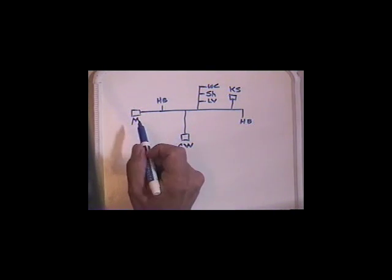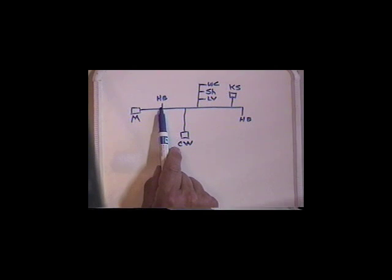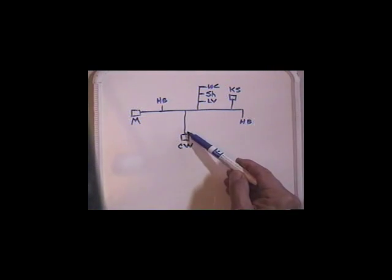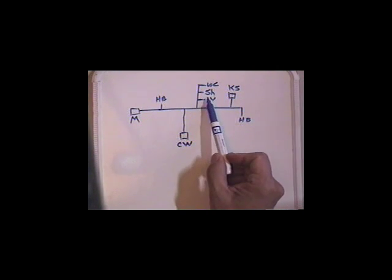Get a piece of paper and make a drawing of this. We're going to start with the meter, come in here to a hose bib, and then branch down to a clothes washing machine.